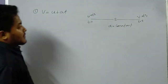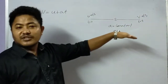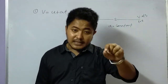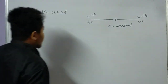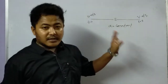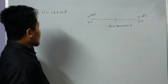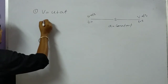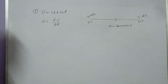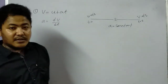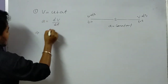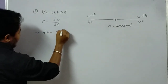We will derive this equation by calculus method for a body that is in constant acceleration, just as we did graphically in the last class. To derive the velocity-time equation, we know that acceleration a = dv/dt. If we cross multiply, we get dv = a dt.